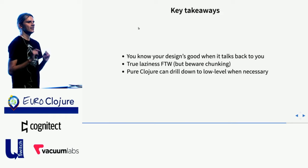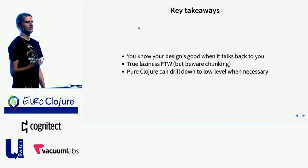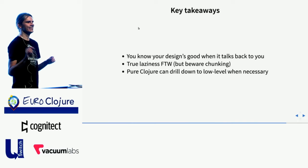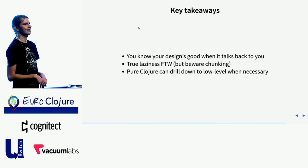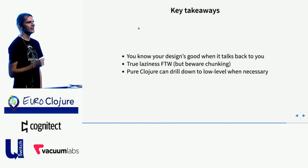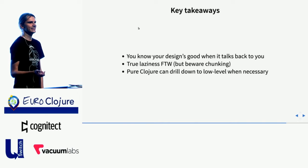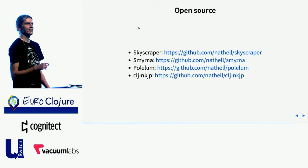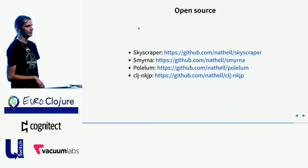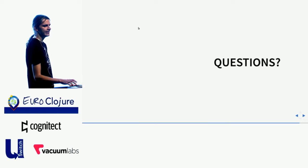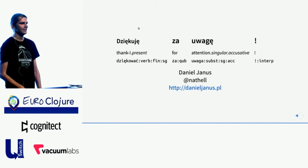Key takeaways: You know your design is good when it talks back to you. This was the case with Skyscraper — after inventing the concept of context and processors, I ended up discovering ways of expressing different kinds of scraping that I originally thought not possible. True laziness is nice because it allowed me in Skyscraper to decomplect the output from storing it. And you can go down to very low-level code in Clojure if you need to, without needing to use Java. All the libraries I talked about are open source, available from their respective GitHub repositories. Thank you.